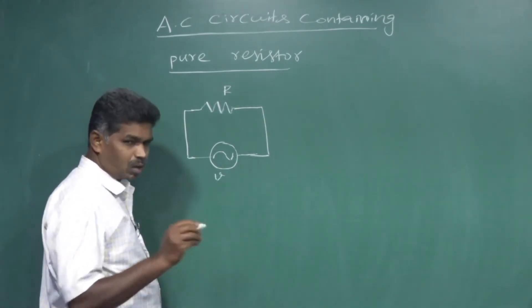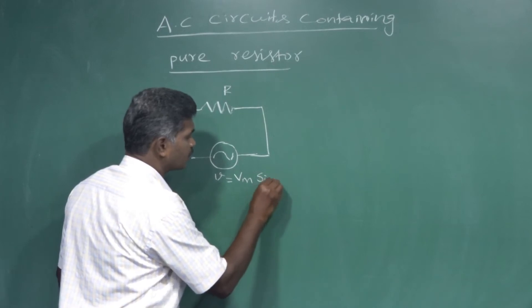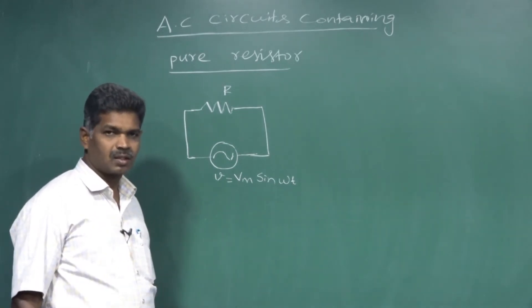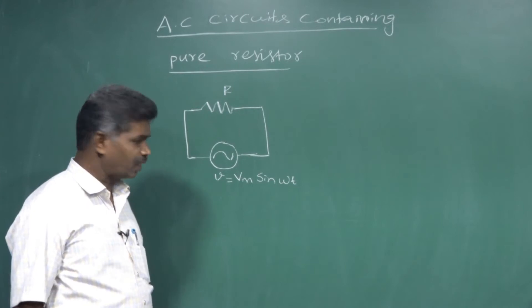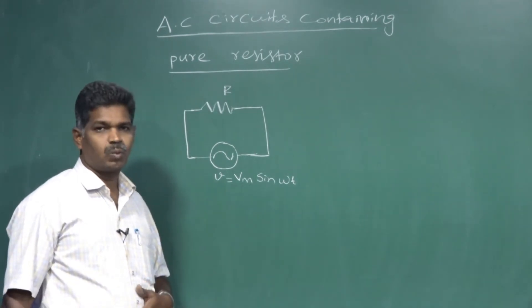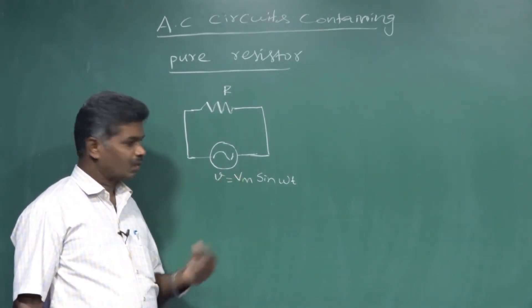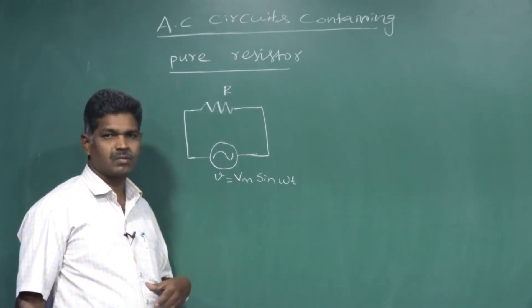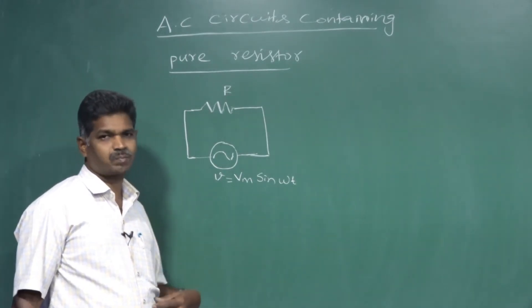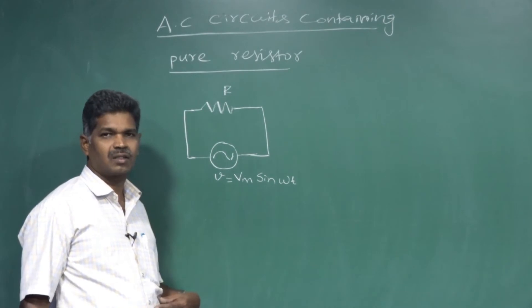The resistor with resistance R is going to connect with the AC circuit directly. The AC circuit can generate an alternating current and alternating voltage. That voltage we are going to mention by the symbol small v: V equal to VM sin(ωt), because our generating voltage varies sinusoidally.